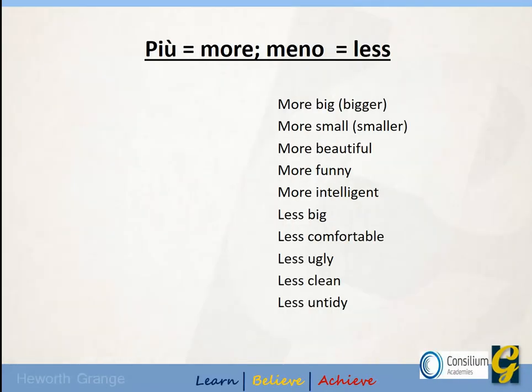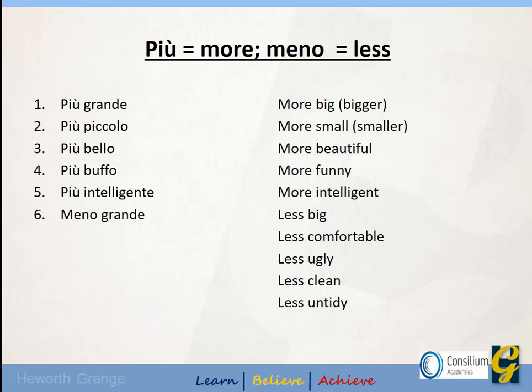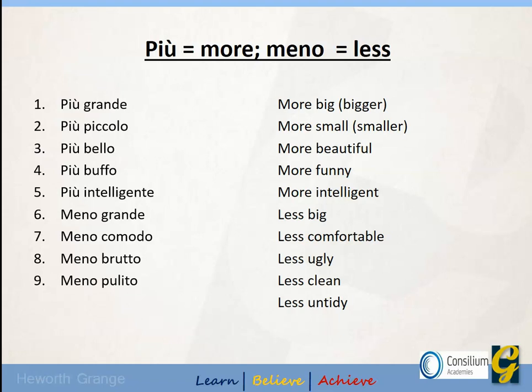Va bene? Allora. Poi è più difficile questo esercizio — slightly harder, but the same task. This time it's all of the phrases you've just seen, but I've taken the Italian away. Allora, di nuovo, fa una pausa — take a pause. You can either write these or say them to yourself. When you unpause, you will have your answers. Le risposte: più grande; più piccolo; più bello; più buffo; più intelligente. Meno grande; meno comodo; meno brutto; meno pulito; e numero dieci, meno disordinato.